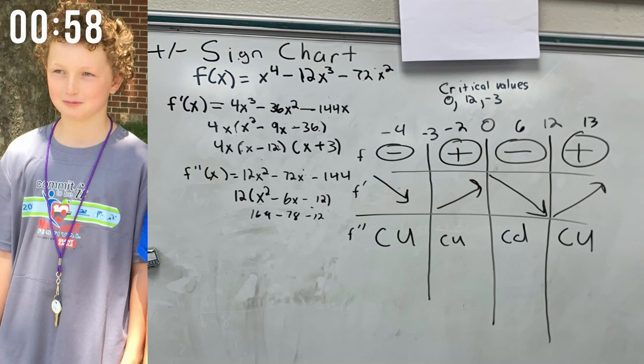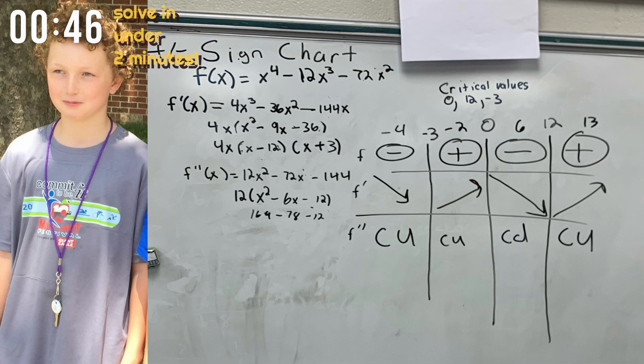You have your original equation, f of x equals x to the fourth minus 12x cubed minus 72x squared. Once you find the first derivative of this equation, you get 4x cubed minus 36x squared minus 144x. You must factor out a 4x.